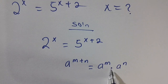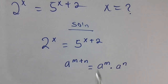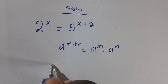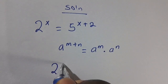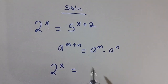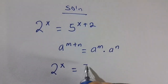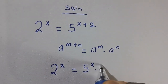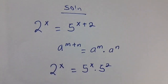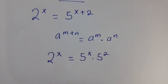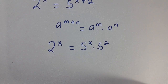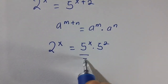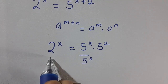Applying this to the right-hand side, we are going to have 2 raised to the power x equals 5 raised to the power x multiplied by 5 raised to the power 2. Then let's divide both sides by 5 raised to the power x to separate it from 5 raised to the power 2.